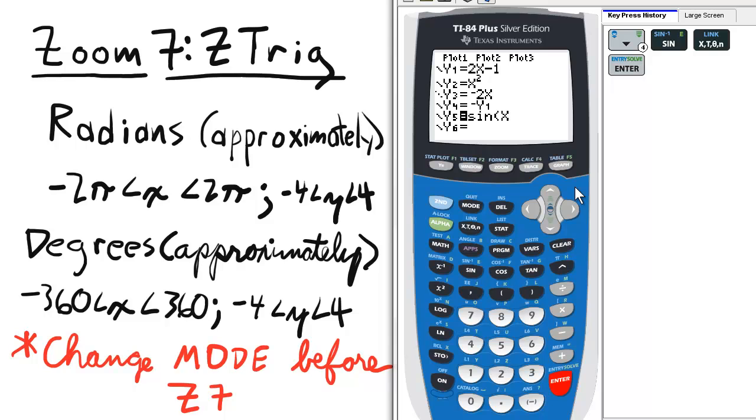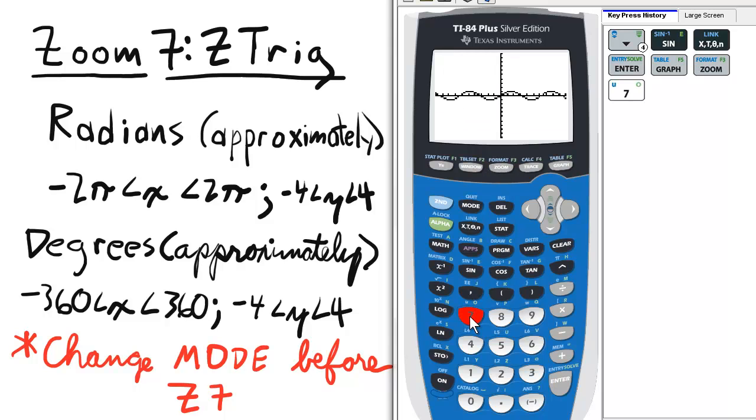I want you to see what this looks like on the regular graphing screen. So in the regular Z standard viewing screen, the sine function looks rather flat. So going to Zoom and selecting option 7 for Z Trig, look at this, much better shape.